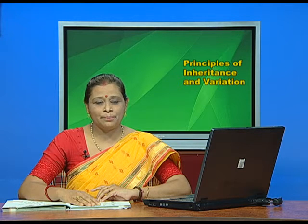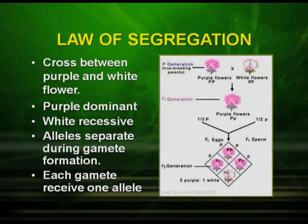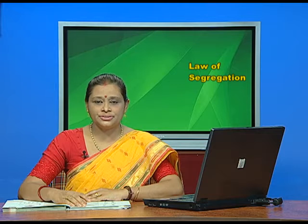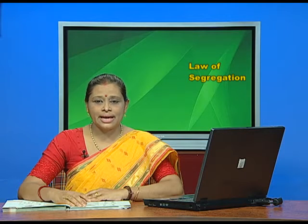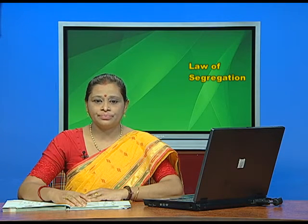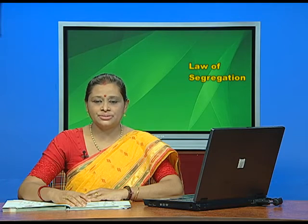Earlier, you have studied about the first law of Mendel, that is, the law of dominance. Let us start our discussion from the law of segregation. As you see in the picture, there is a cross between a purple and white flower. The purple is dominant. During gamete formation, each of these alleles get separated, and then these two alleles get together during hybrid formation. So each gamete receives one allele — the alleles separate during gamete formation. This analogy can be seen during the process of meiosis.